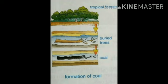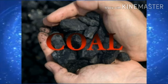These forests were grown in the marshy places. The dead plants and trees get buried in the soil, forming a layer of dead trees. It gets squeezed and due to heat and pressure it converts into coal. It takes millions of years for the formation of coal.